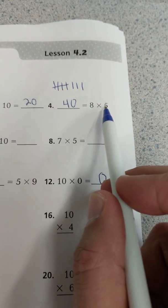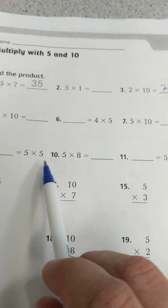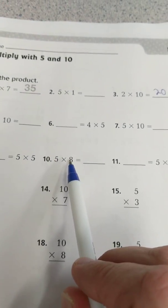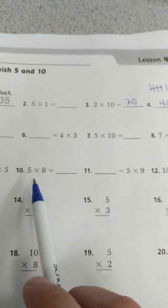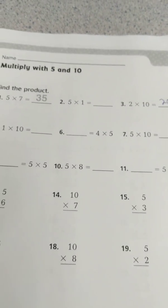And just because if you see a problem like this, and you see a problem like this, remember the commutative property, and these answers will end up being the same. Because just because these numbers are flipped around, it doesn't change the results.